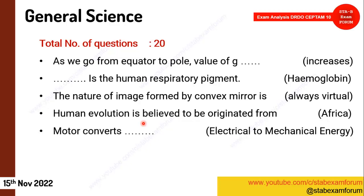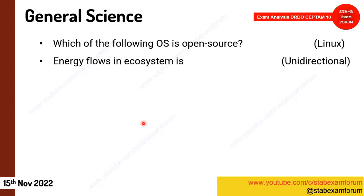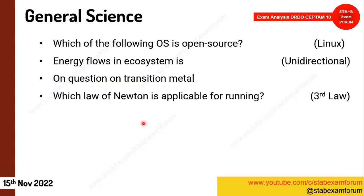One question on energy conversion in motors: the correct answer was electrical to mechanical. All these questions are very easy compared to Day 1 and Day 2. Next, a question on operating systems: which is open source — Linux was the correct answer. Then one on ecosystem energy flow: unidirectional.